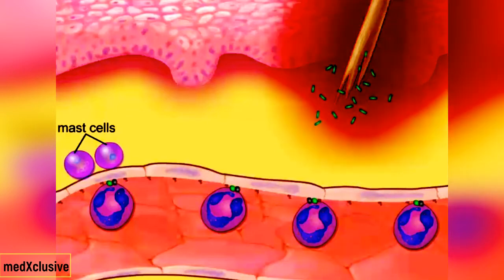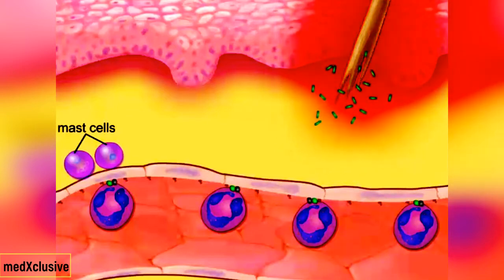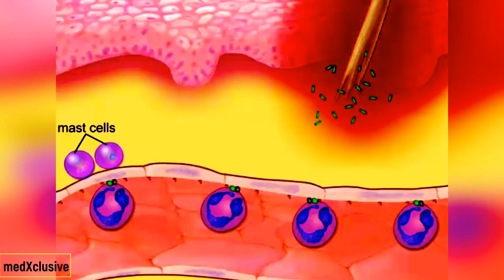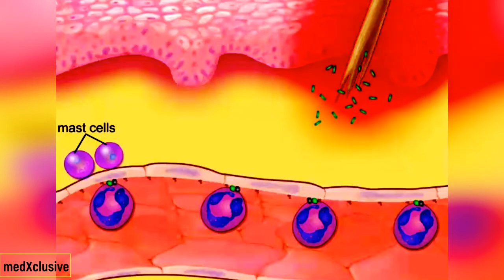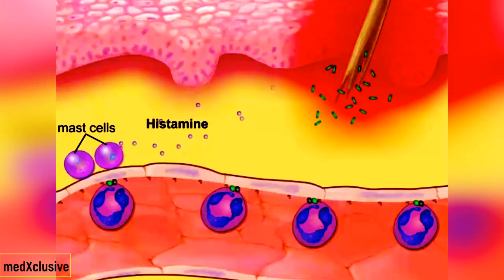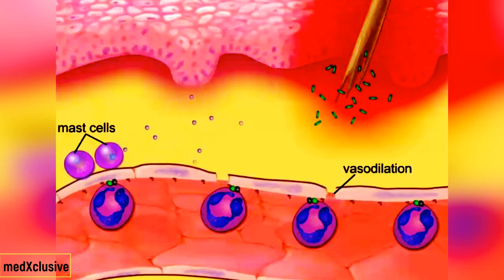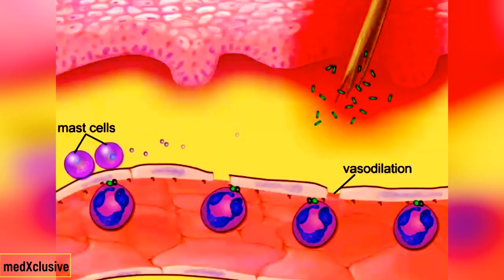The inflammatory mediators released by the injured tissue bring about changes in the environment that cause mast cells to degranulate and release histamine. Histamine causes vasodilation and an opening of the junctions between the endothelial cells.